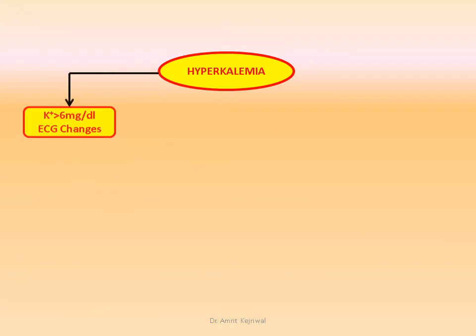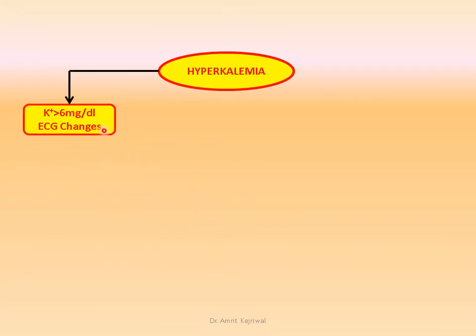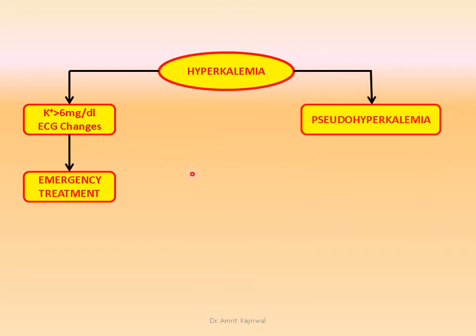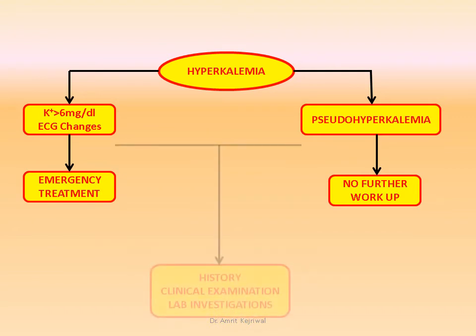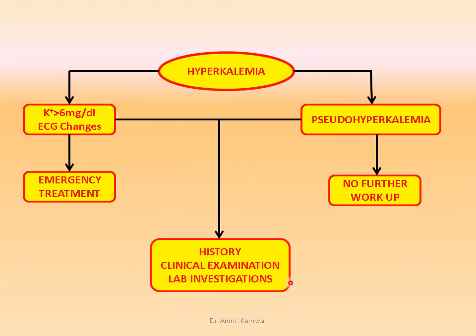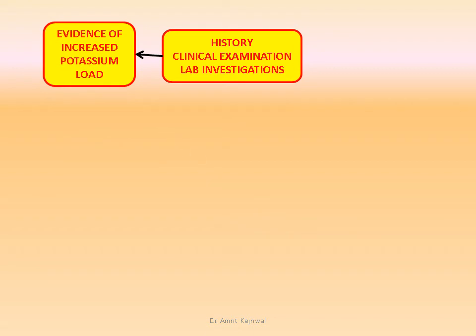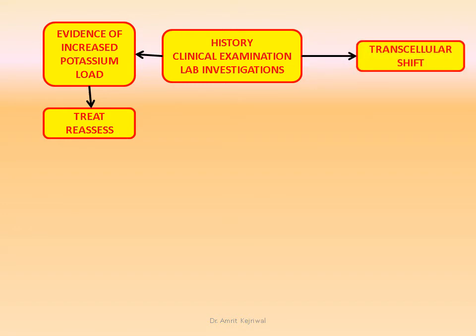In the approach to hyperkalemia: if potassium is greater than 6 mEq/L or there are ECG changes, consider emergency treatment. Look for pseudohyperkalemia — if confirmed, no further workup. If the patient has hyperkalemia but potassium is not greater than 6 and ECG changes are absent and pseudohyperkalemia is ruled out, proceed to detailed history, clinical examination, and lab investigations. Then look for evidence of increased potassium load and treat and reassess. If there is a transcellular shift, treat accordingly.